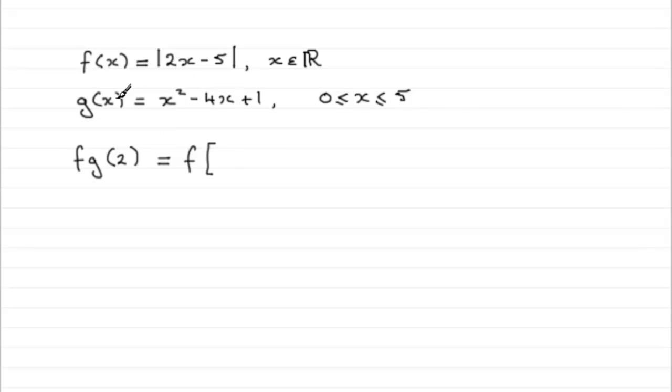g of 2 is where we put 2 in place of the x, so that's going to be 2 squared minus 4 multiplied by 2 plus 1. And if we work that out, this is going to be equal to f of 4 minus 8, which is minus 4, plus 1 is minus 3.